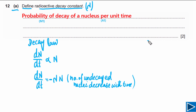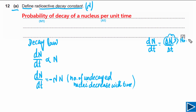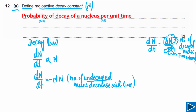Let's write this in a simpler form for clearer understanding. We replace dN/dt with ΔN/Δt — they represent the same thing. ΔN is the number of nuclei that decay in time interval Δt, so ΔN is the number of decayed nuclei. N is the number of undecayed nuclei, and Δt is the time interval. So we can write: ΔN/Δt = -λN.